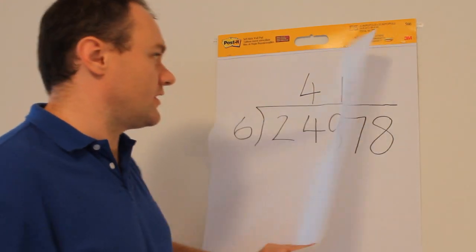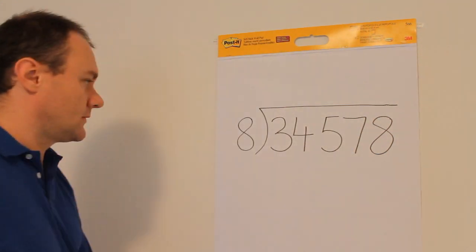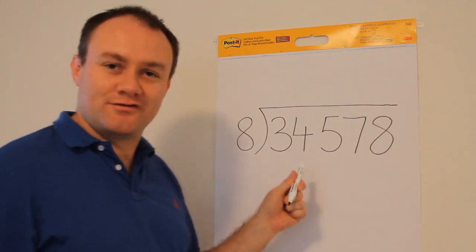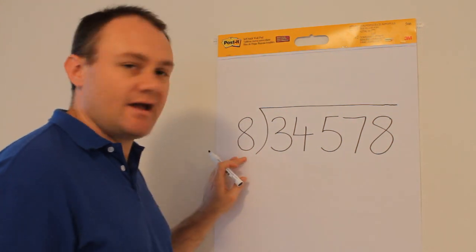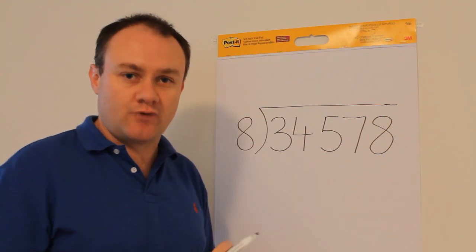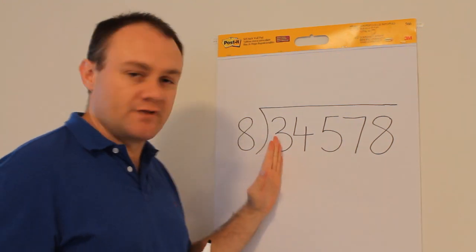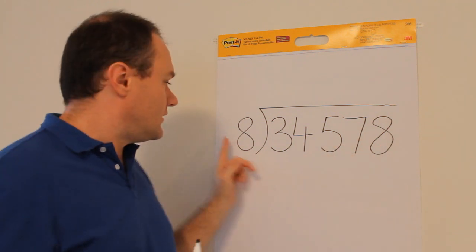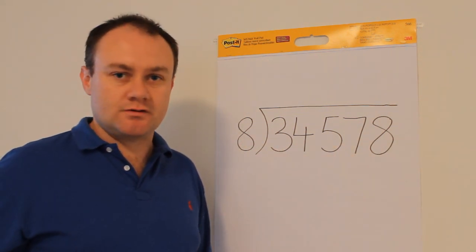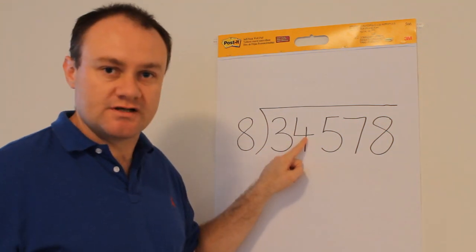Moving straight on to the very last question: 34,578 divided by eight. Now this might look a bit longer and harder but the approach is just the same. Start from the left and move to the right. How many times does eight go into three? None, obviously it's too big so bring the next digit into play.